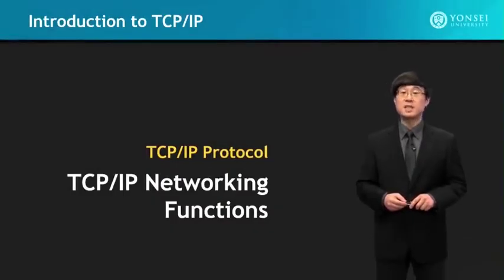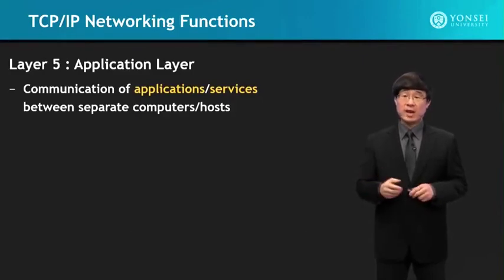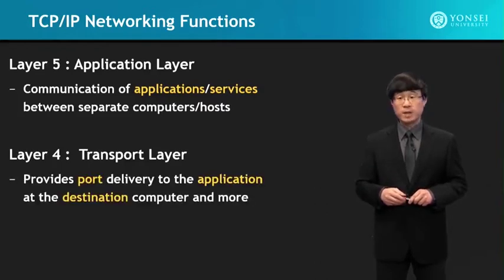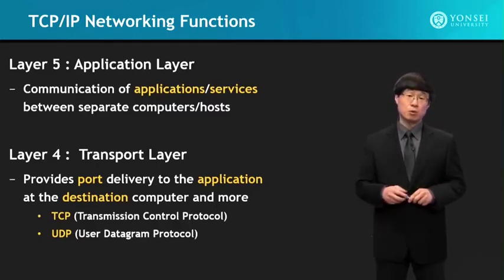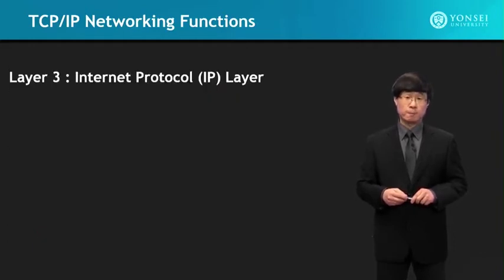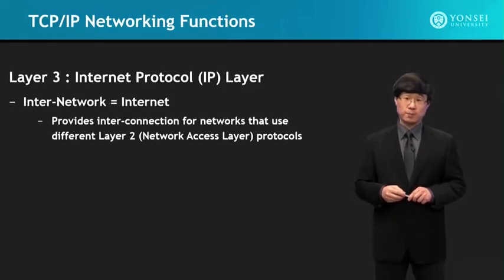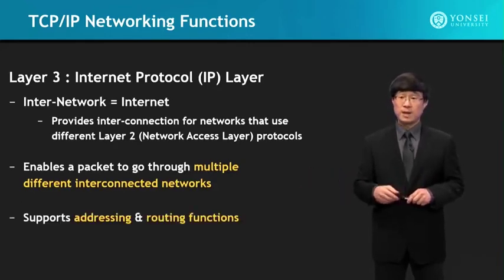In this lecture, we're going to study about TCP/IP networking functions. At the application layer, communication of applications and services between separate computers and hosts is accomplished. The transport layer provides port delivery to the application at the destination computer. TCP and UDP are the main protocols used, but there are other transport protocols as well. Then comes the internet — the IP protocol layer — where the word 'internet' comes from 'inter-networking,' enabling a packet to go through multiple different interconnected networks with addressing and routing functions throughout these multi-hop networks.